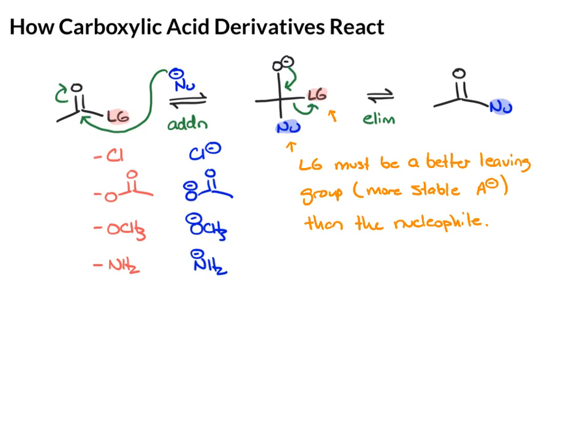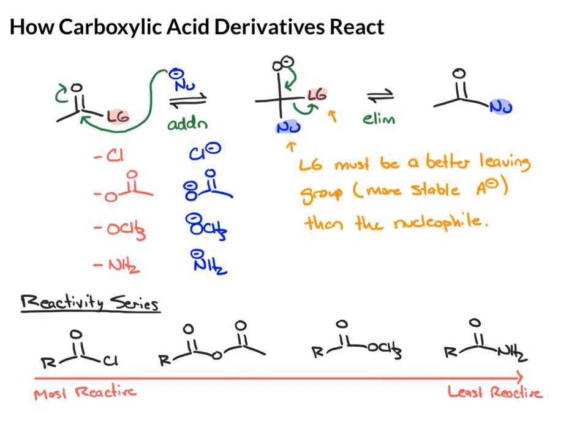Let's take a look at the reactivity series for the carboxylic acid derivatives. So here we have the acid chloride, which is the most reactive, followed by the anhydride, then the ester, then the amide, which is the least reactive. And what that means is if you look at the leaving groups on these, Cl is the best leaving group because Cl minus is the most stable. And then of these, the amide is the poorest leaving group because NH2 minus is the least stable.